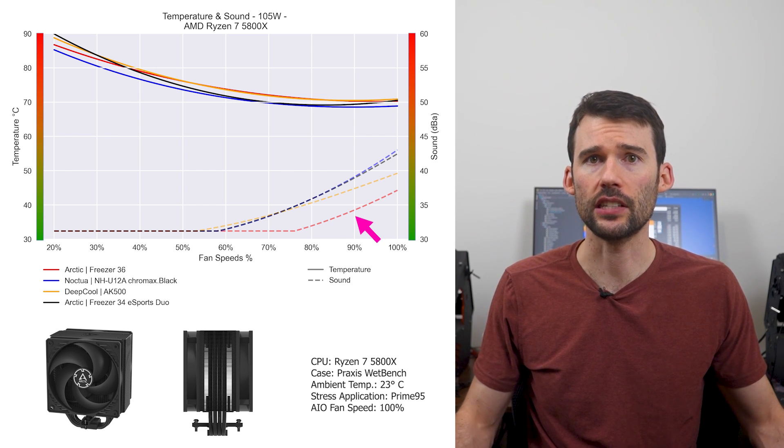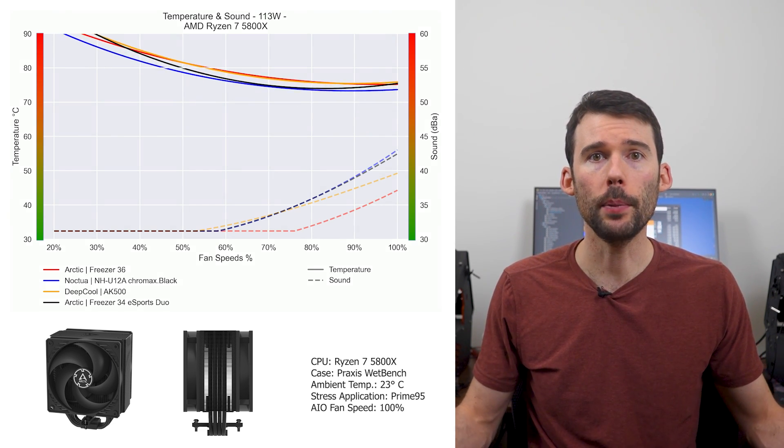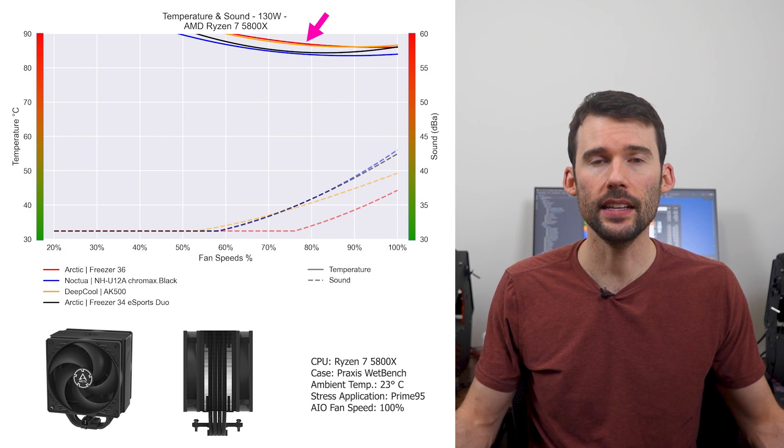However, the Arctic Freezer 36 has the lowest noise profile across the board. And when we pump up the heat to 130 watts, we can see that this trend continues.